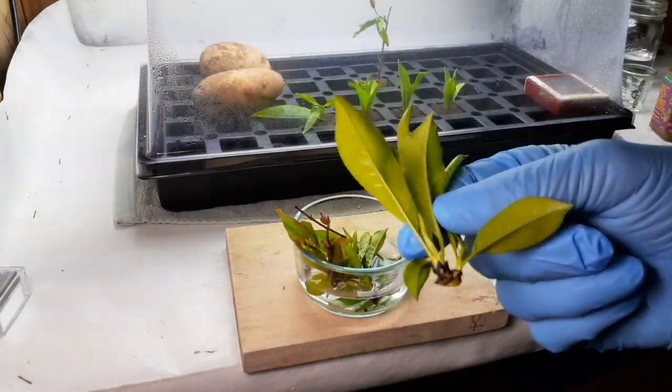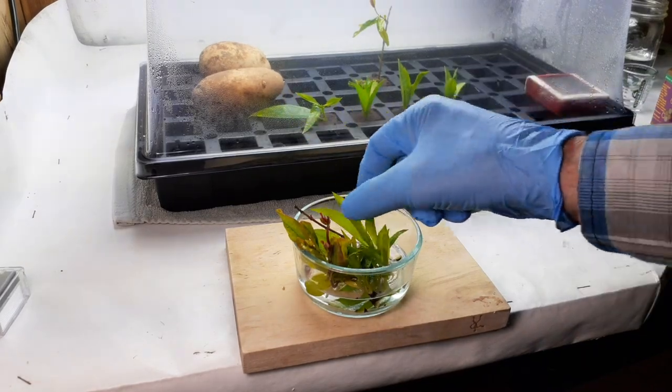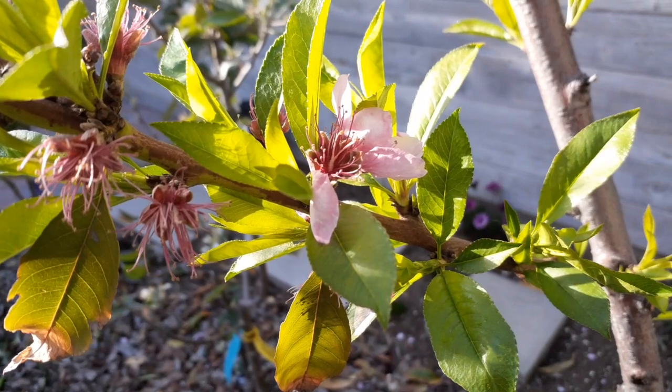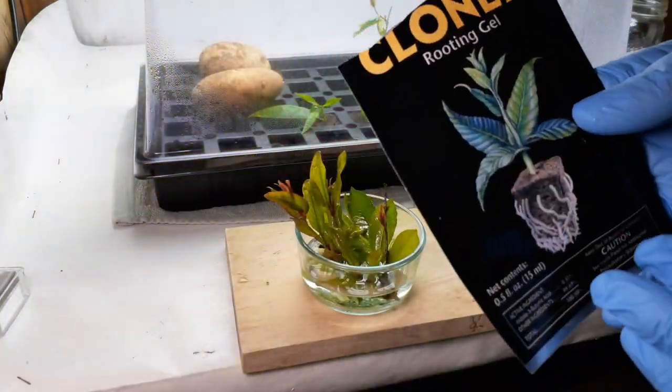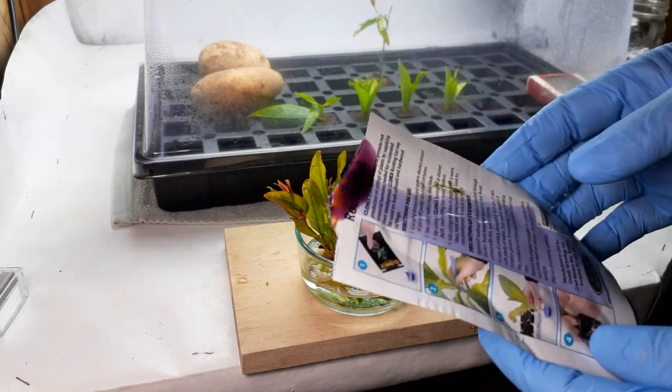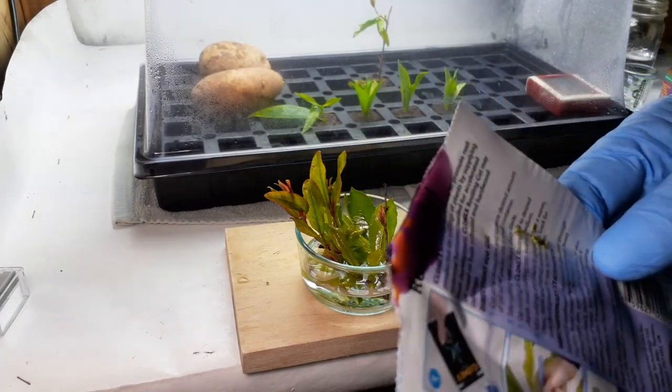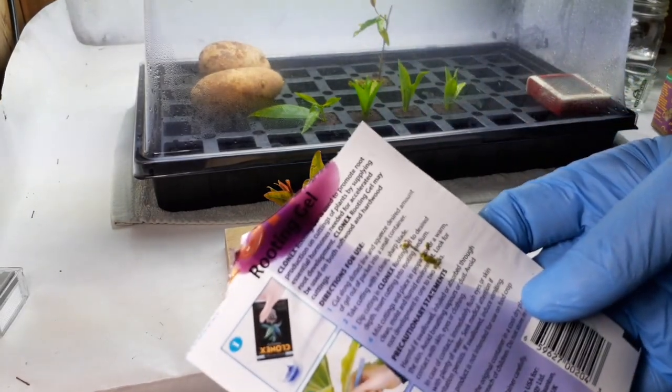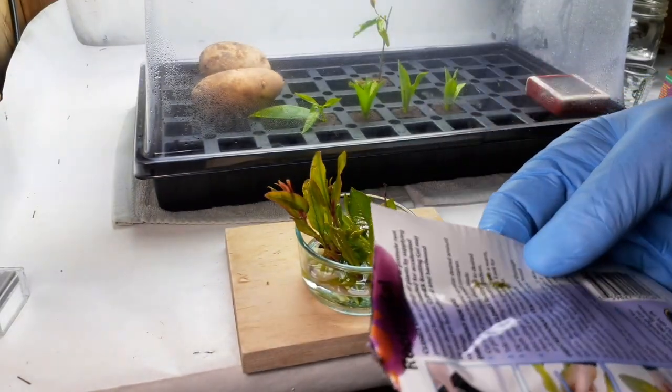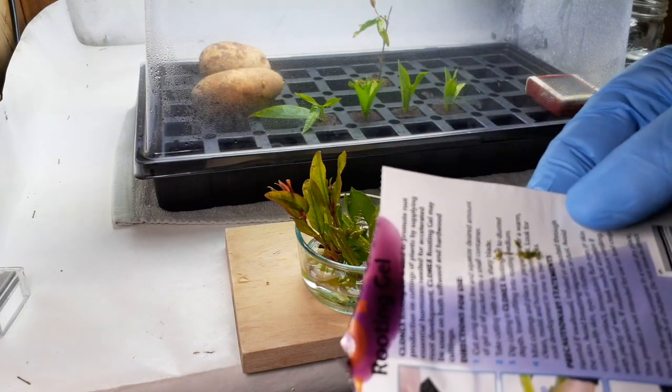I'm going to show you guys an absolute foolproof method of cloning any fruit tree. You're going to be using this stuff right here - Clonex rooting gel. This is one of the best that we've come across. It's a really interesting purple color that looks really cool. This is the stuff that's going to be put onto the stems.